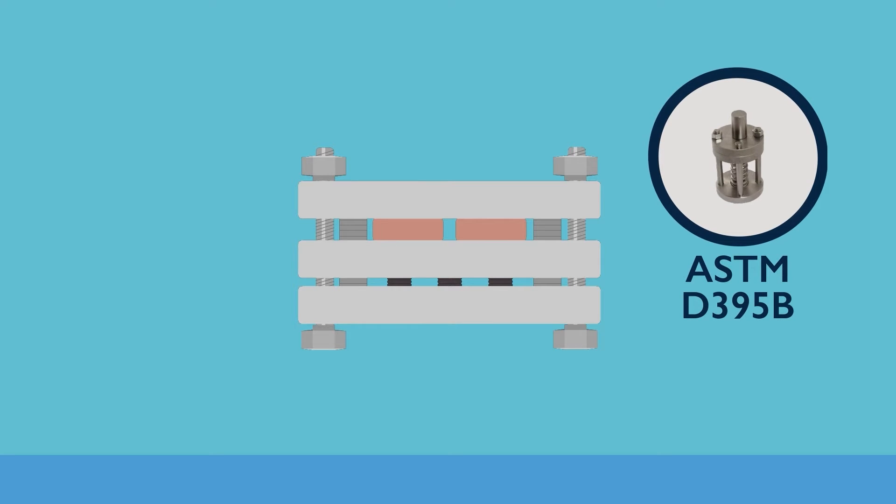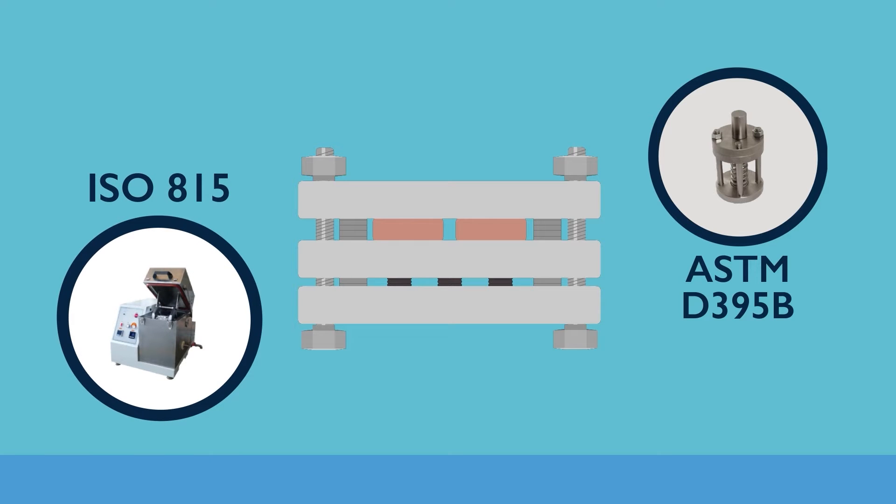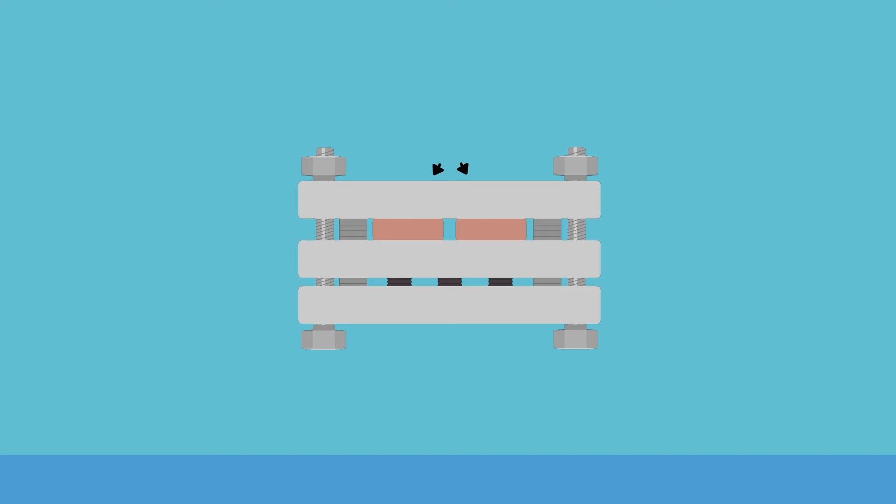Compression set is a laboratory test measuring the amount of recovery in an elastomer after compressive force is removed. The ASTM D395 and ISO 815 industry standards define how this compression set is measured.